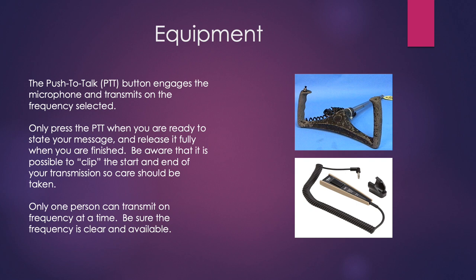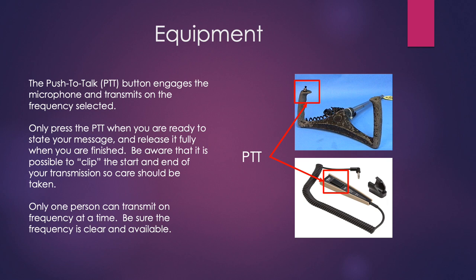We briefly talked about the push-to-talk button — the button that engages the microphone and transmits on the selected frequency. On the control column, there's a small button on top of the yoke which we press down to transmit. There's also a handheld microphone option as an alternative to a headset. We only depress the push-to-talk when we're ready to talk, relay our full message while holding it, and release it once we've finished transmitting. Only one person can transmit on a frequency at a time, so we must ensure the frequency is clear before transmitting, otherwise our message will be covered up.